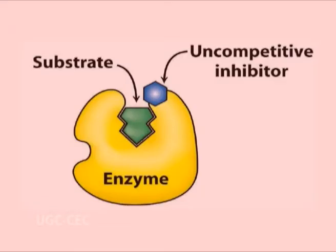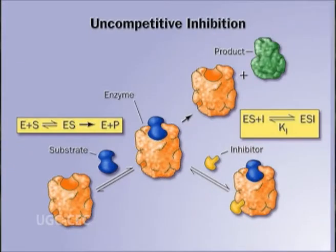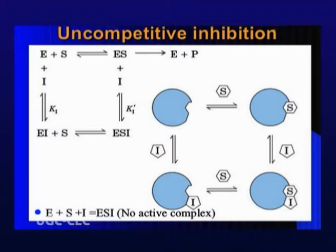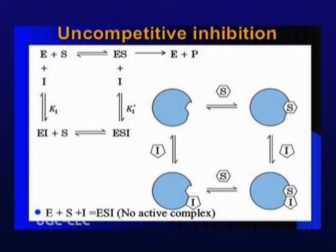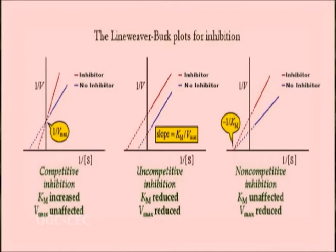The uncompetitive inhibitor is not able to bind with the free enzyme, but combines with the ES complex only at a site other than the active site — sometimes referred to as mixed inhibition. As a result, the ternary complex EIS is formed, but catalysis does not occur. Kinetically, the uncompetitive inhibitor decreases both Km and Vmax to the same extent. The double reciprocal plots show parallel lines indicating uncompetitive inhibition. This type of inhibition is rare in one-substrate reactions but common in two-substrate reactions.